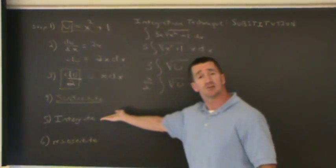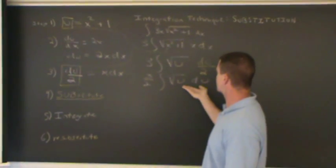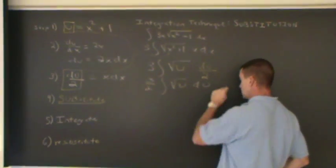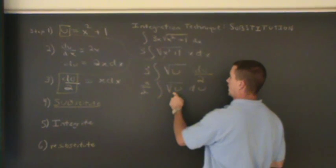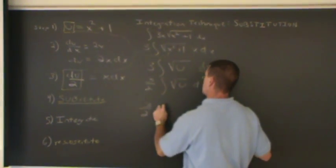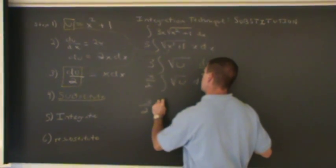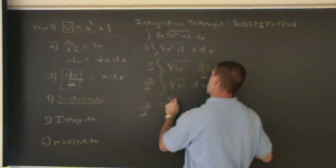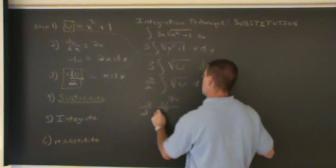Now we're going to perform the integration. We can integrate this. Everything is with respect to u. This is u to the one half. So if I increase that power by one, I get u to the three halves divided by three halves.